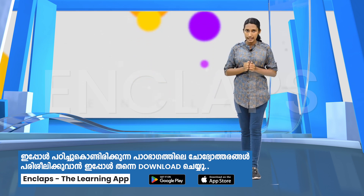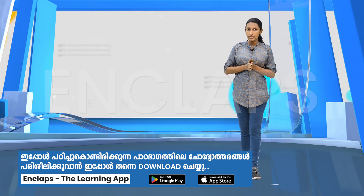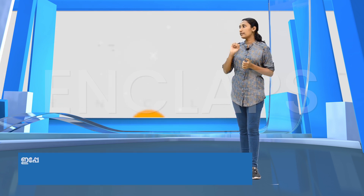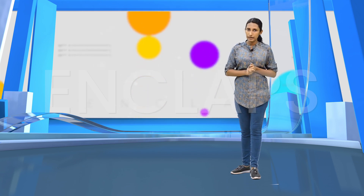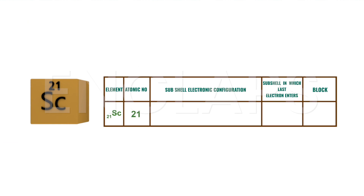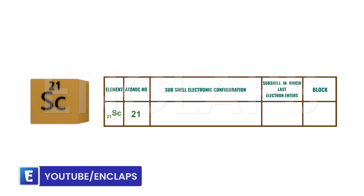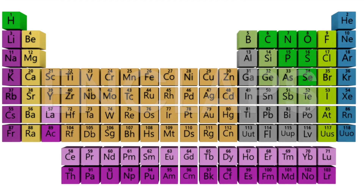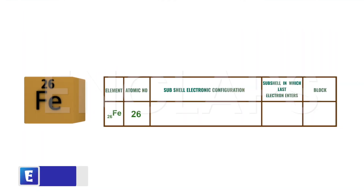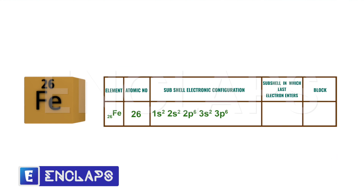If there is any D subshell prior to the last S subshell, then the element will belong to D block in the periodic table. For example, in the electronic configuration of scandium, there is an outermost S subshell, but there is a D subshell prior to it, so scandium belongs to D block. Similarly, for iron, there is an outermost S subshell with a D subshell prior to it, so iron also belongs to D block in the periodic table.